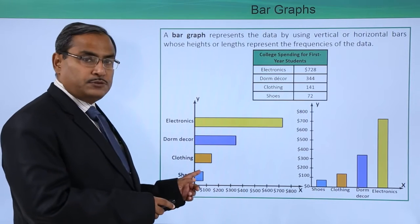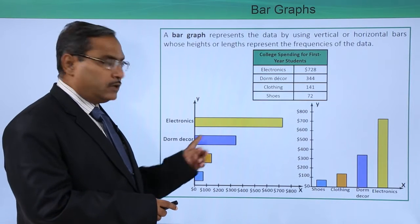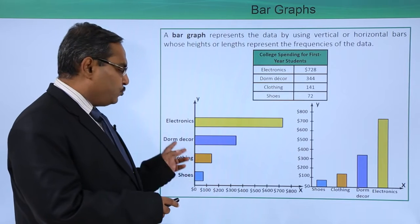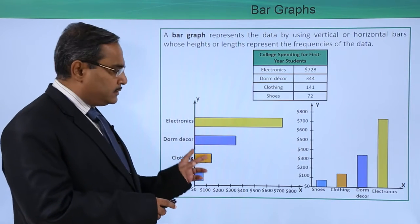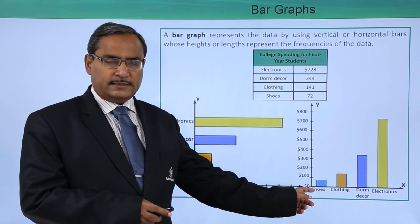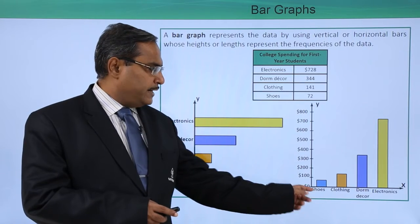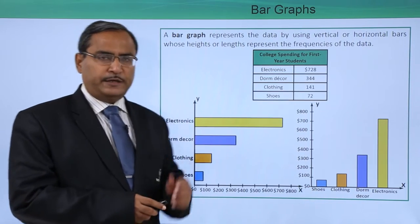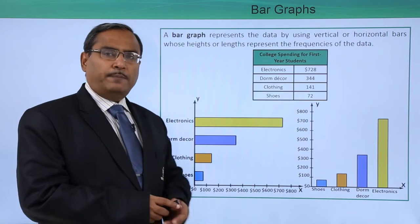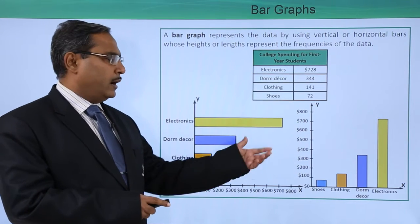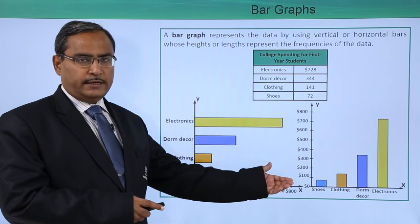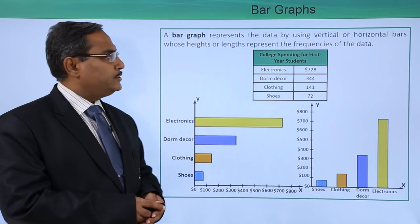These expenses we are having. Now, this is the respective graph. Here these bars are horizontal, but if you swap this x and y levels, the x-axis now has the expenditure heads and y-axis has the expenditure values. In that case, the bar graph is showing the bars in the vertical direction.